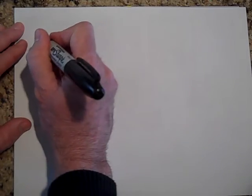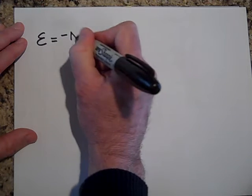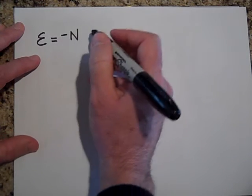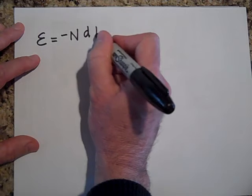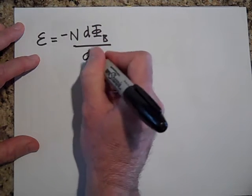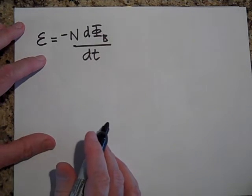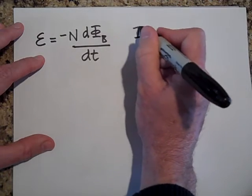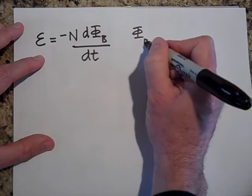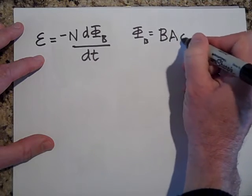So if that's the case, then the EMF that's induced in this hoop is going to be equal to negative N, depending on how many hoops we have, times how fast the flux is changing with time: dΦ/dt. And so the flux, the magnetic flux, is going to just be B A cosine of theta.